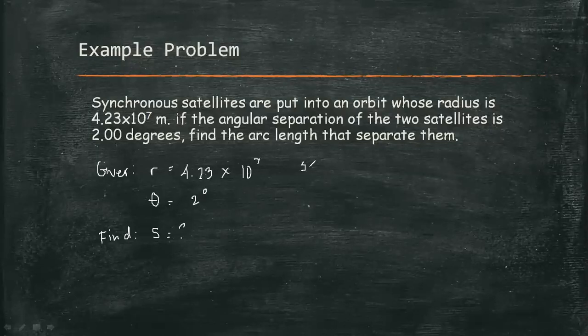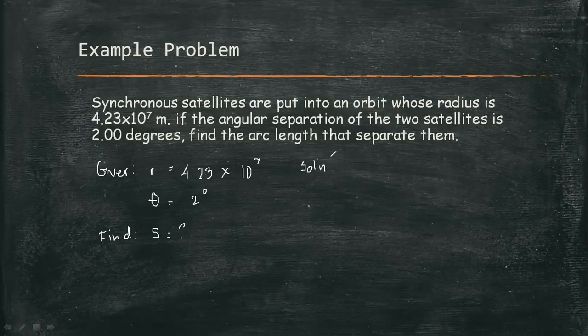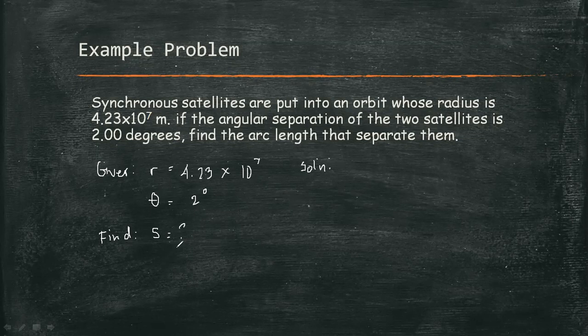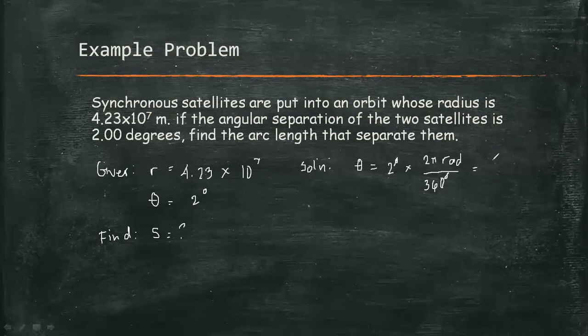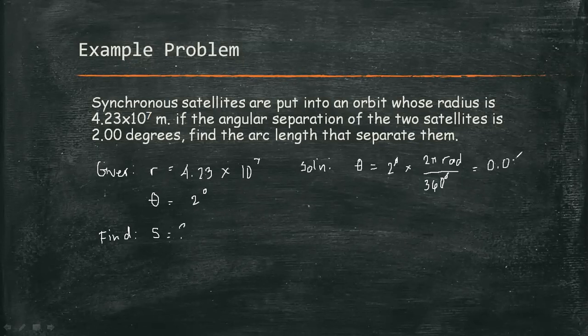So first off, let's convert theta into radians. So 2 degrees times 2π radians over 360 degrees. We will cancel the degree sign. Therefore, theta is 0.0349 radians.